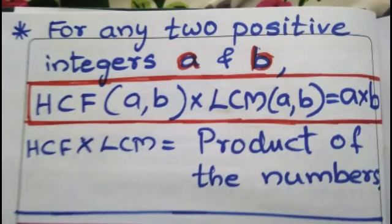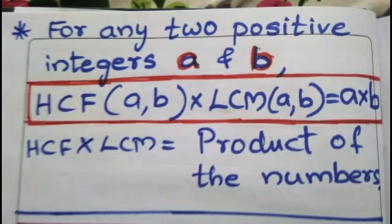For any two positive integers A and B, HCF of A and B into LCM of A and B equals A into B. That is, HCF into LCM equals the product of the numbers. For any two numbers, if we are finding the product of HCF and LCM, that will be the same as the product of the given two numbers.